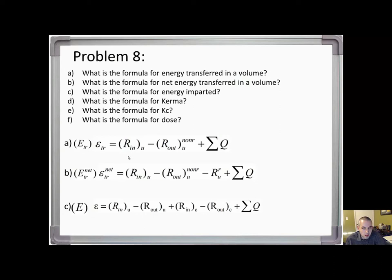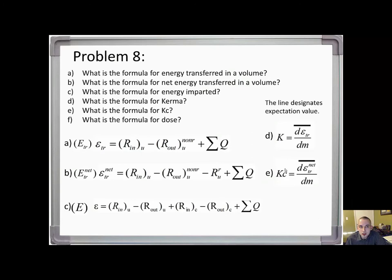Part d: what is the formula for calculating kerma? Essentially it's the expectation value of the energy transferred in a volume divided by the mass dm. Collision kerma can be calculated by the expectation value of the net energy transferred divided by dm. And lastly, absorbed dose can be calculated by the expectation value of the energy imparted divided by dm.